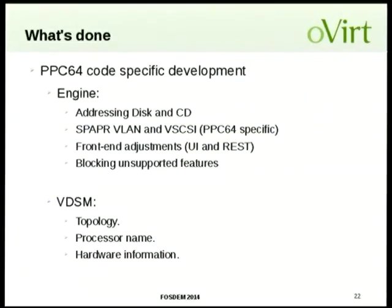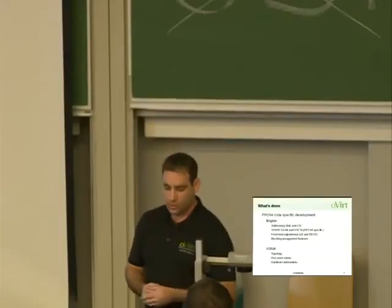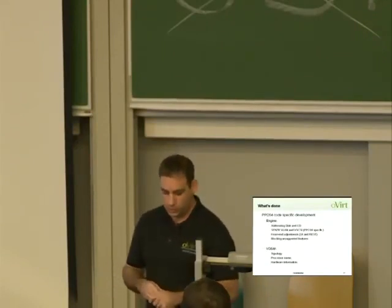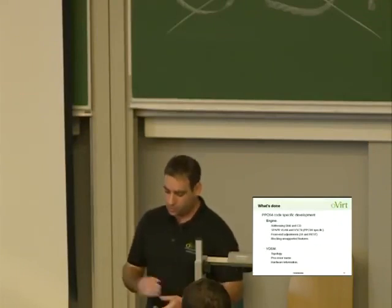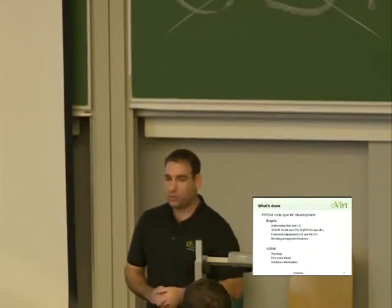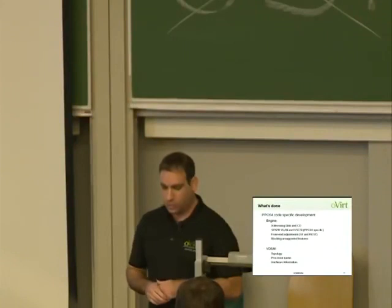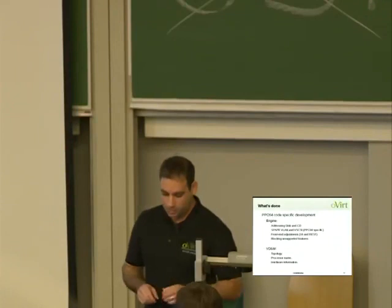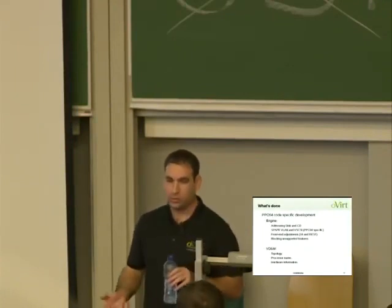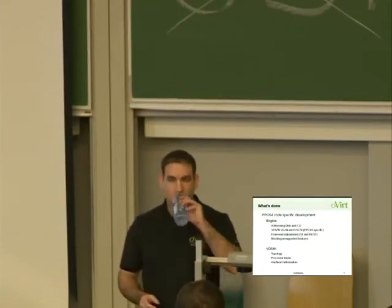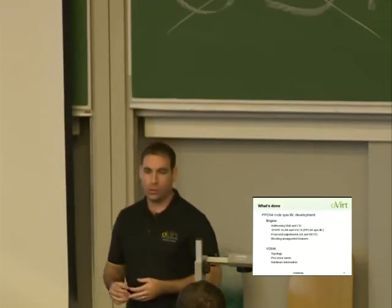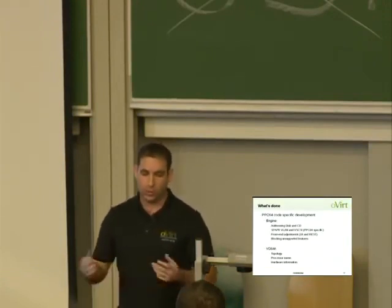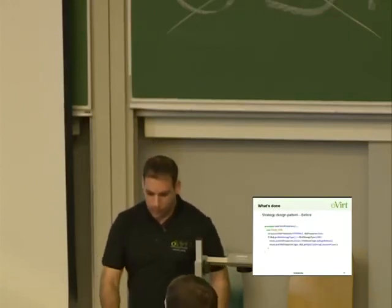For platform-specific code, the first area was PCI addressing — PCI addressing in PPC64 is different than x86. We also added specific PPC64 devices for VLAN and vSCSI, the SPAPR devices. There were front-end adjustments to filter only relevant choices for PPC. We also had to block unsupported features such as snapshotting and migration. In VDSM, there were changes to the topology reporting — we added the processor name and hardware information relevant to PPC.